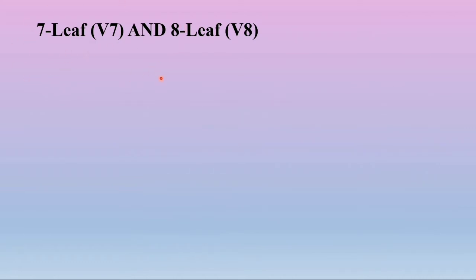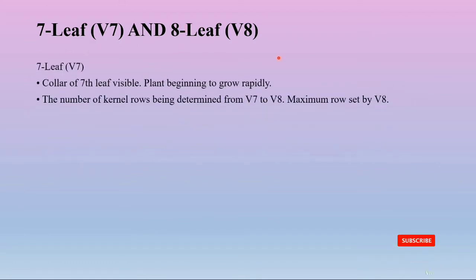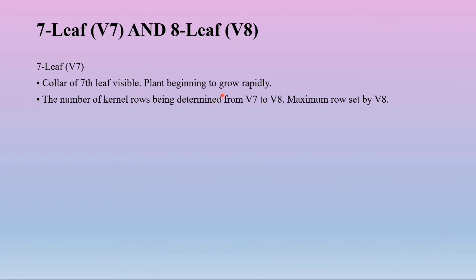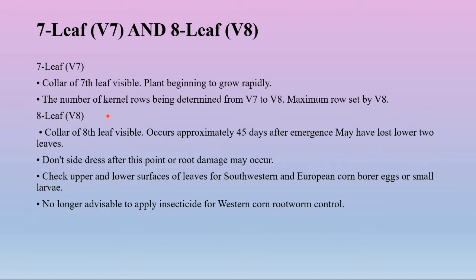After the sixth leaf stage, you can observe the seventh and eighth leaf stages. At V7, the collar of the seventh leaf is visible and the plant begins to grow rapidly. Kernel rows are being determined from V7, with maximum row number set by the eighth leaf stage (V8). At V8, the collar of the eighth leaf is visible — approximately 45 days after emergence — and the plant may have lost its lower two leaves.